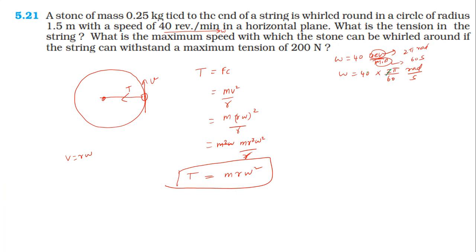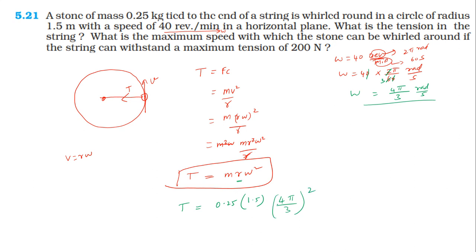Substituting values: mass = 0.25 kg, radius = 1.5 m, ω = 40 × 2π/60. Calculating T = m × r × ω²: T = 0.25 × 1.5 × (40 × 2π/60)².